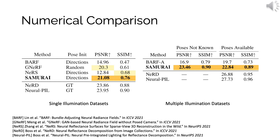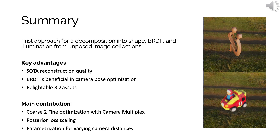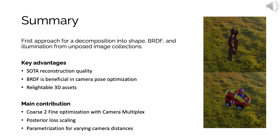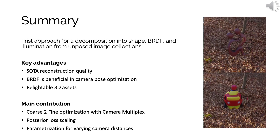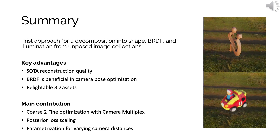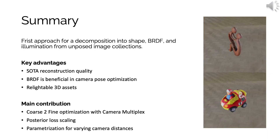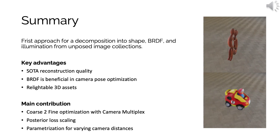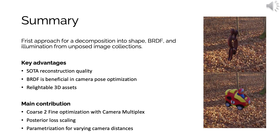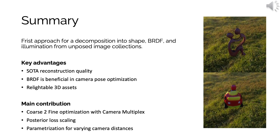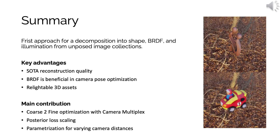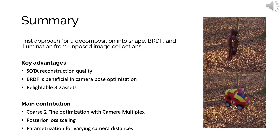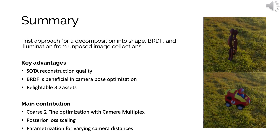Note that no existing method can handle scenes with multiple illuminations while jointly optimizing the camera poses, so as a baseline we created a modified version of BARF with appearance conditioning. In summary, we propose the first method that can decompose in-the-wild unposed image collections into shape, BRDF, and illumination. SAMURAI achieves state-of-the-art performance compared to related prior art, and we show that the explicit shape and BRDF decomposition is beneficial for camera pose recovery. We achieve this using our novel coarse-to-fine optimization with camera multiplex and posterior loss scaling, and we also introduce a flexible camera and volume parametrization for varying camera distances.